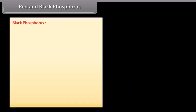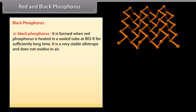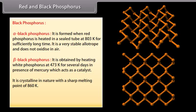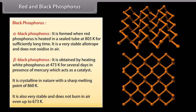Black phosphorus has two forms. Alpha black phosphorus is formed by heating red phosphorus in a sealed tube at 803 Kelvin for a long time; it is a very stable allotrope and does not oxidize in air. Beta black phosphorus is obtained by heating white phosphorus at 473 Kelvin for several days in the presence of mercury as a catalyst; it is crystalline with a melting point of 860 Kelvin and does not burn in air even up to 673 Kelvin.